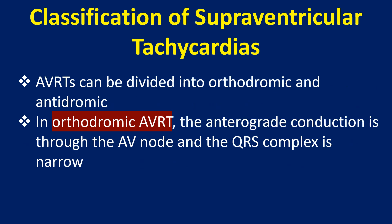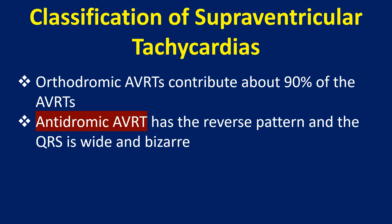AVRTs can be divided into orthodromic and antidromic. In orthodromic AVRT, the anterograde conduction is through the AV node and the QRS complex is narrow. Orthodromic AVRTs contribute about 90% of AVRTs. Antidromic AVRT has the reverse pattern and the QRS is wide and bizarre.